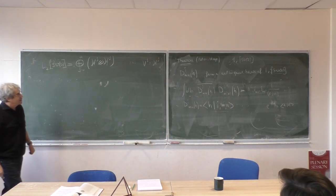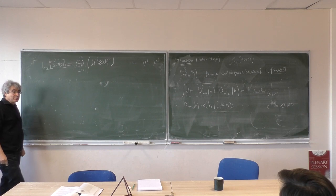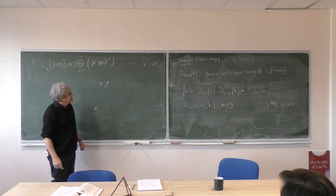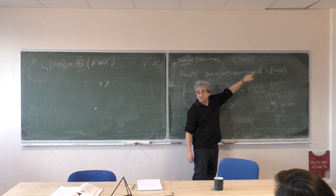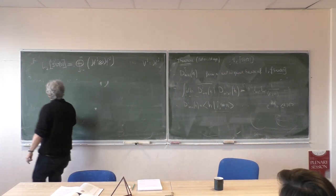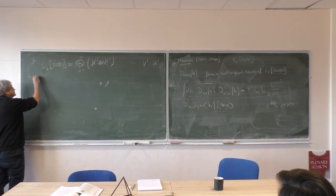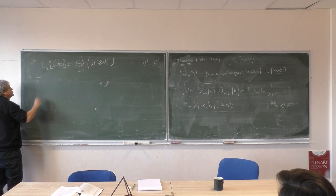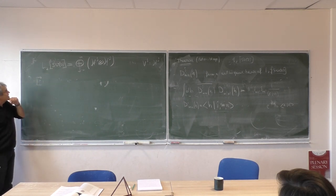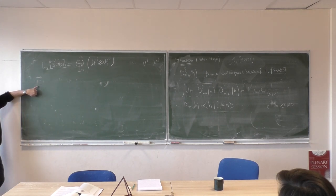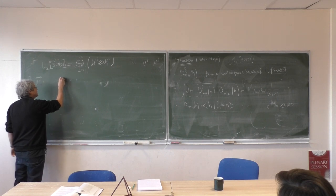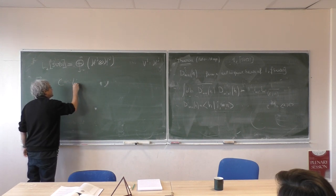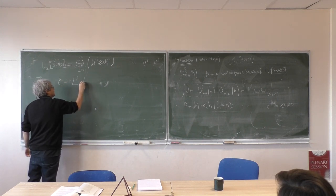This has a lot to do with the Laplace operator, with the Casimir operator. In this Hilbert space, we have the L operator — the left-invariant vector fields. L is an operator. Out of this L, you can construct an operator which plays a crucial role. Let's call it C, which is L·L.